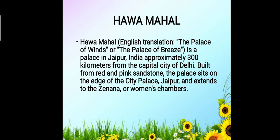Hawa Mahal, known as the Palace of Winds or Palace of Breeze in English, is a palace located in Jaipur, India, approximately 300 kilometers from the capital city of Delhi. It is built from red and pink sandstone. The palace sits on the edge of the City Palace, Jaipur, and extends to the Zenana or Women's Chambers. It was a summer palace built by Maharaja Sawai Pratap Singh. There is a free flow of cool breeze through its rooms, making it the summer residence of the royal family during hot months.